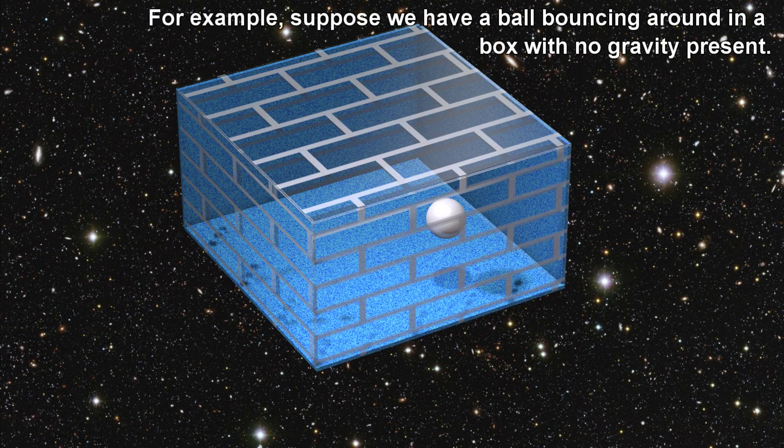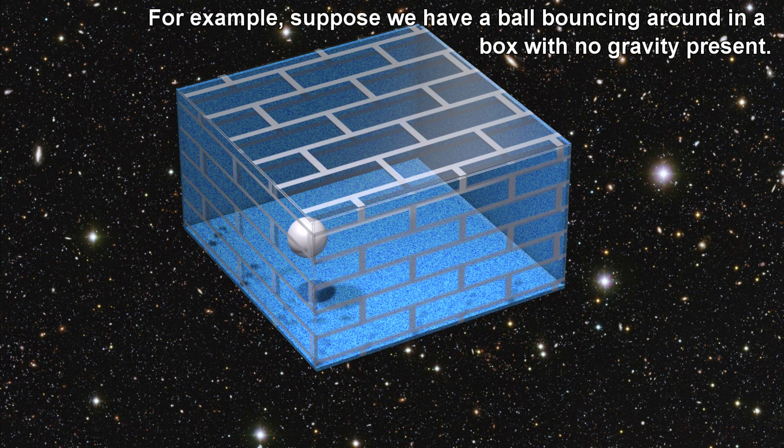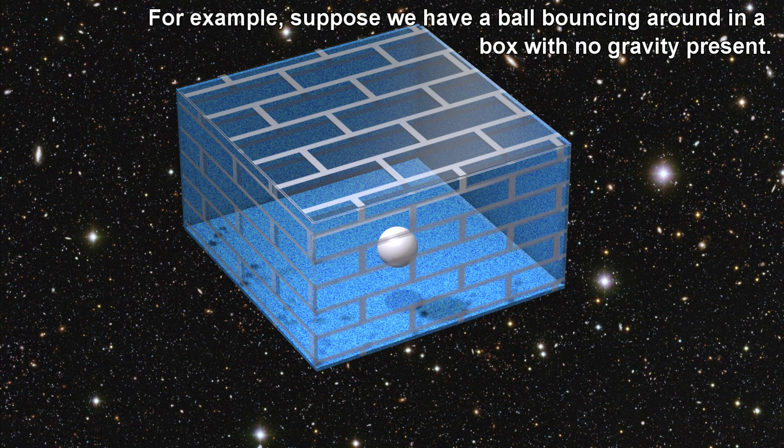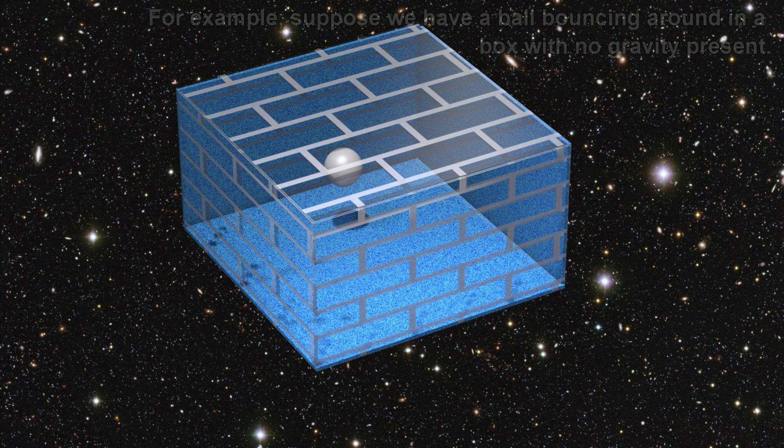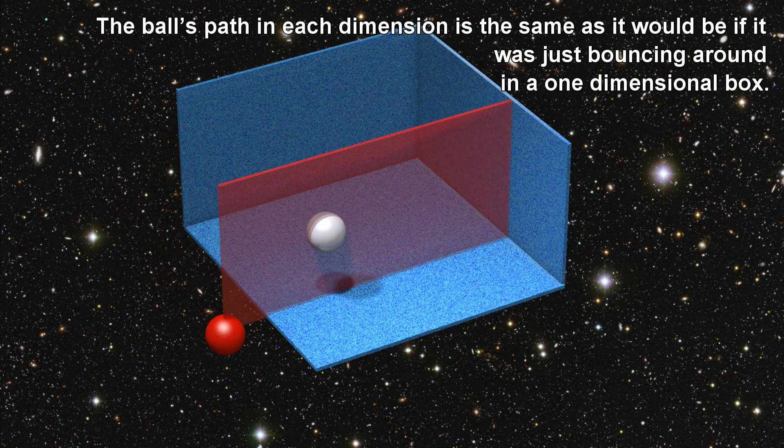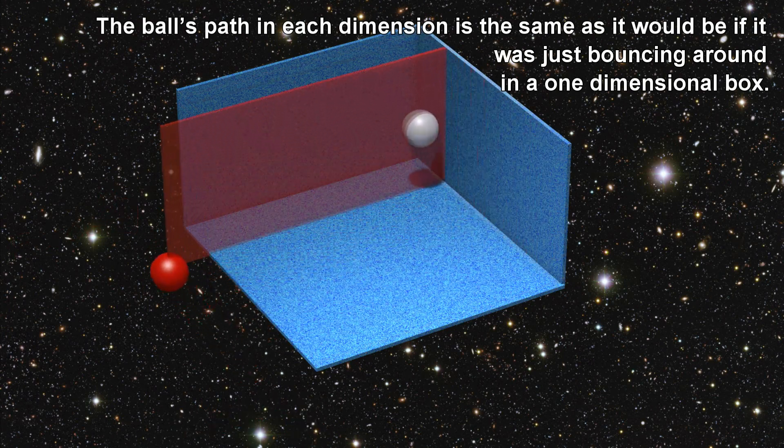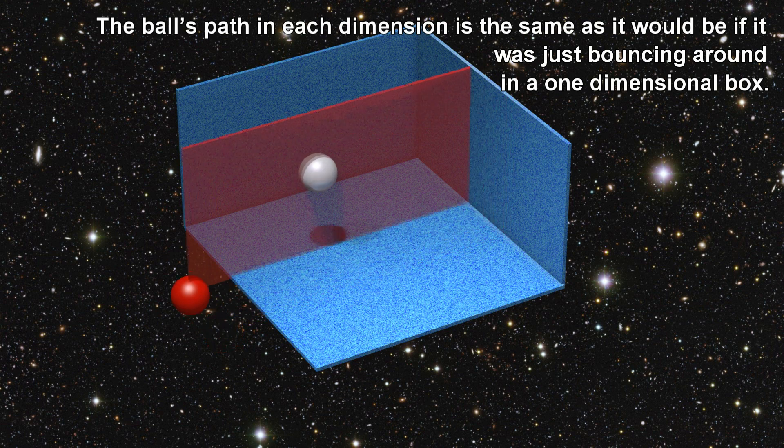For example, suppose we have a ball bouncing around in a box with no gravity present. The ball's path in each dimension is the same as it would be if it was just bouncing around in a one-dimensional box.